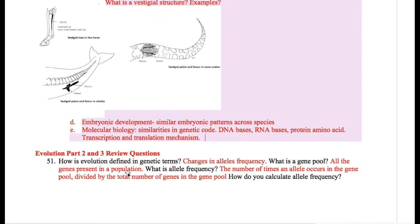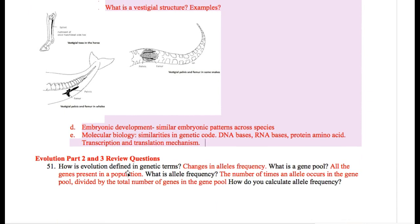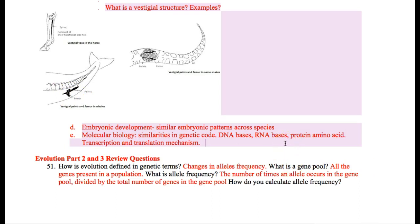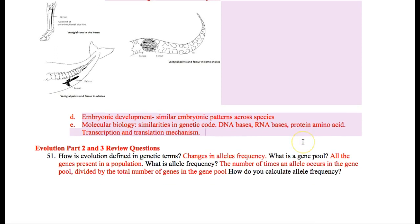The next one is vestigial structure — bone structures that were there because the common ancestor had them, but are no longer functional. Whales have pelvis and femur bones, and that tells you that the whale ancestor at one point had legs. They no longer have legs; they just have those tiny leftover bones from the common ancestor. They're still there because of evolution — it just so happened that they're still there, but they're no longer functional.